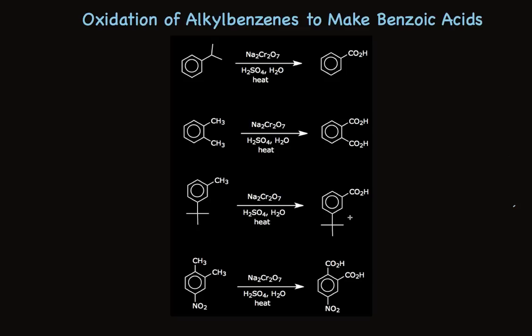You can also have other substituents attached which will be unaffected by the oxidation conditions. I've shown here a nitro xylene being oxidized to make a dicarboxylic acid that still has the nitro group attached. These examples give you a sense that a variety of monoalkylbenzenes will make the carboxylic acid, dialkyl groups will be oxidized, tertiary alkyl groups will not, and you can have other substituents as well. This can be a very useful way to make benzoic acids — put it on your list of tools for organic synthesis.